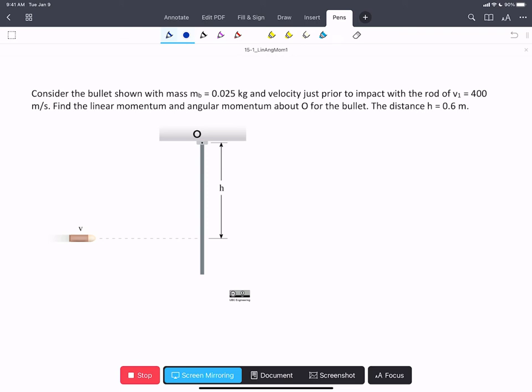In this problem we have a bullet traveling at a velocity of 400 meters per second. We're asked to find the linear momentum and the angular momentum about point O for the bullet.